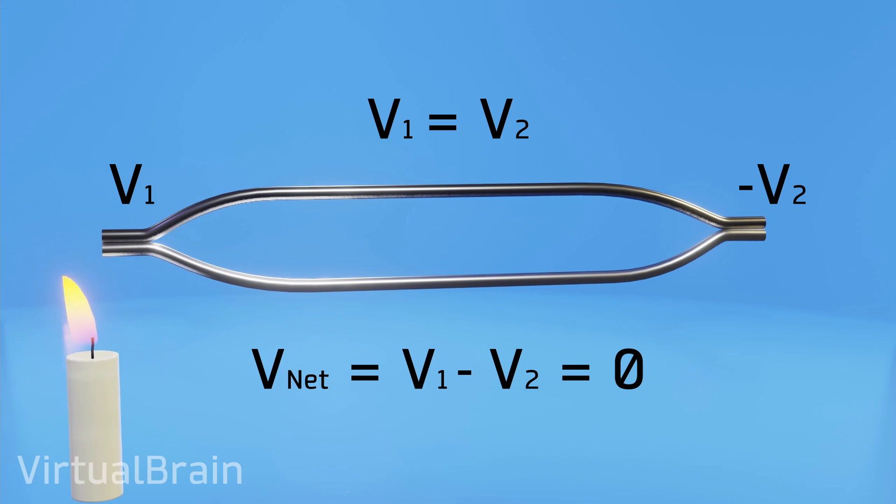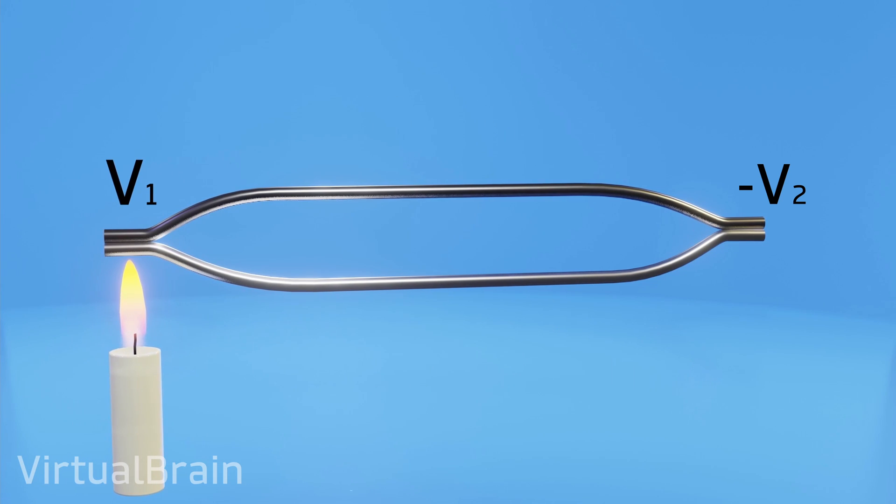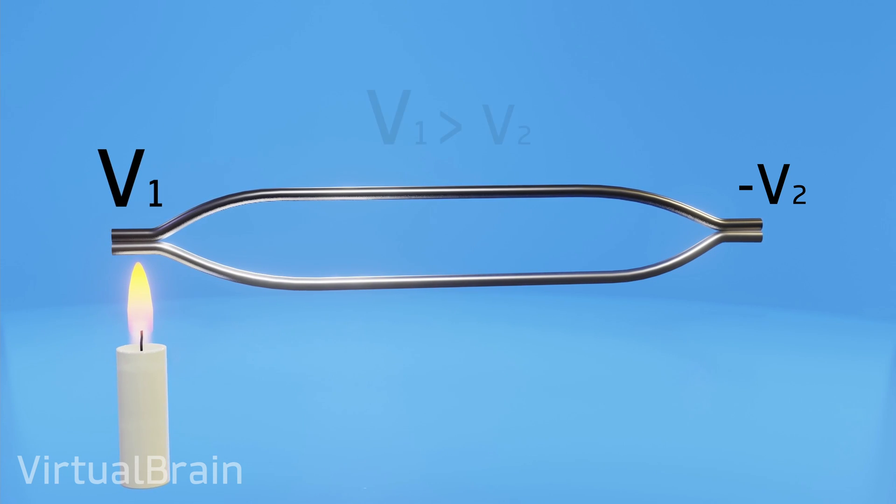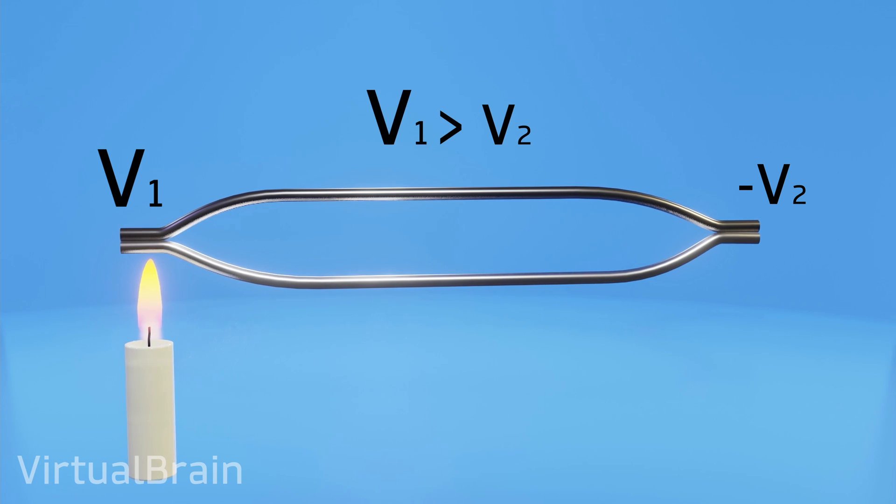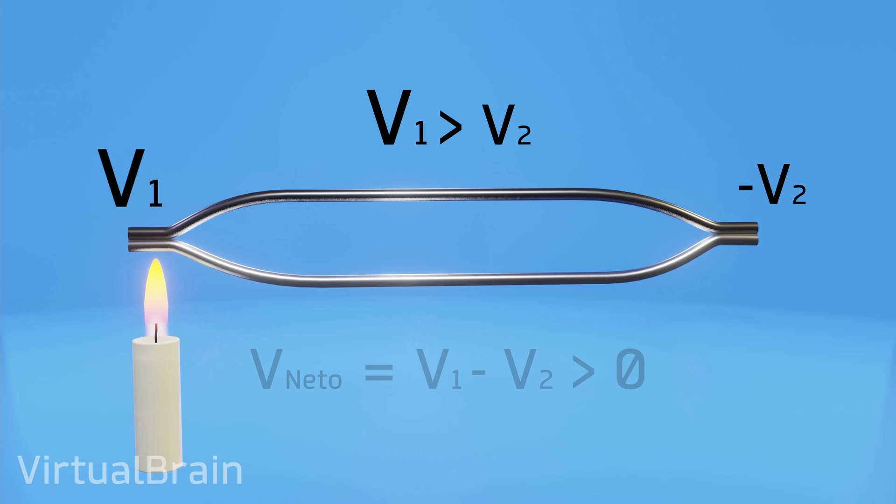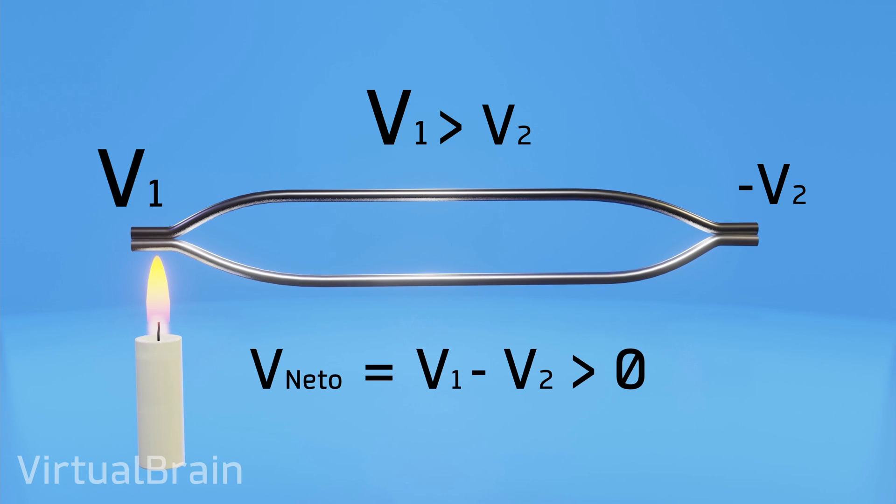By increasing the temperature of one of the junctions, we will be delivering more energy to the free electrons of each material while increasing the potential difference that existed between them. Therefore, now that one of the ends will have a greater potential difference, the net voltage of the circuit will be different from zero and a current will be generated.